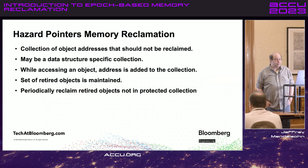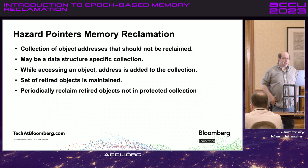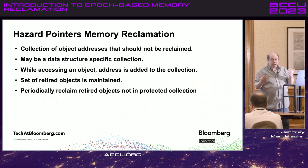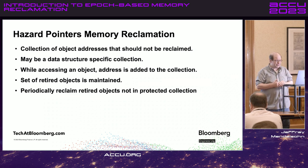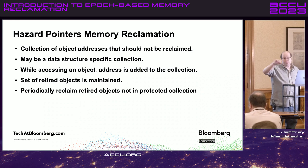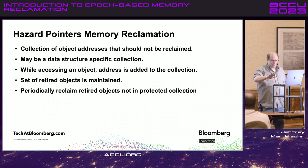Hazard pointers are currently making their way into the standard, hopefully in C++26. Basically, you keep a list of all the things you can't reclaim yet. When a thread goes to reclaim memory, it checks whether the address is in that list first. This list can be global or data-structure-specific. When I access the data structure, I store the addresses I need to protect in this list. All other threads can compare things they're trying to reclaim against that list.